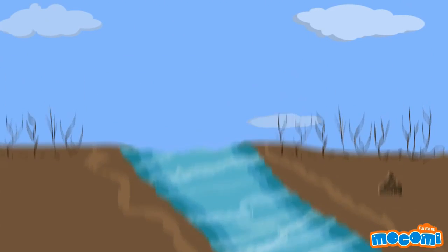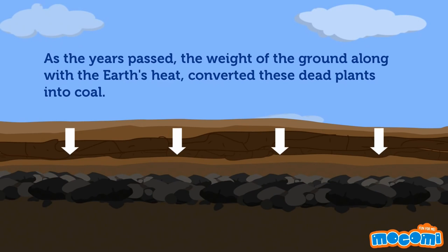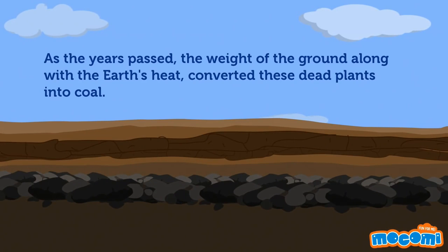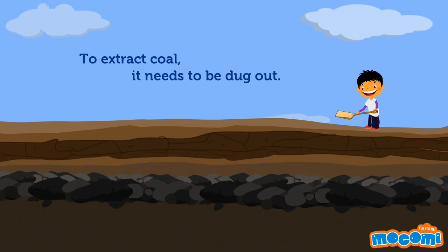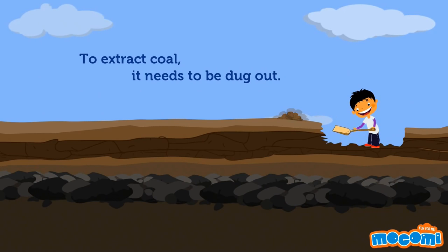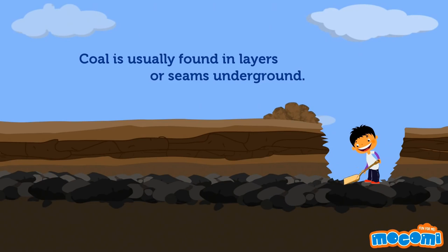As the years passed, the weight of the ground along with the earth's heat converted these dead plants into coal. To extract coal, it needs to be dug out. Coal is usually found in layers or seams underground.